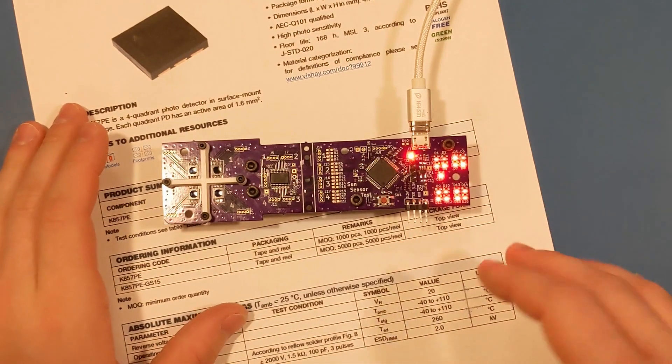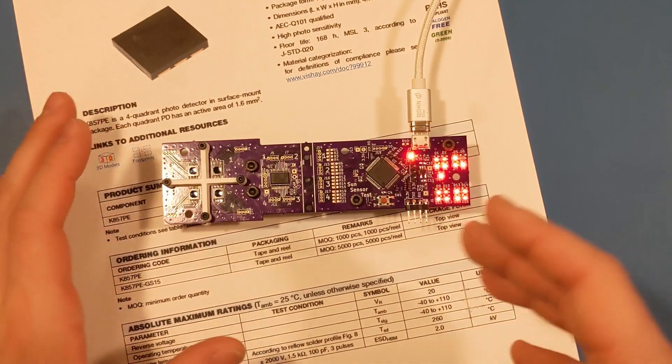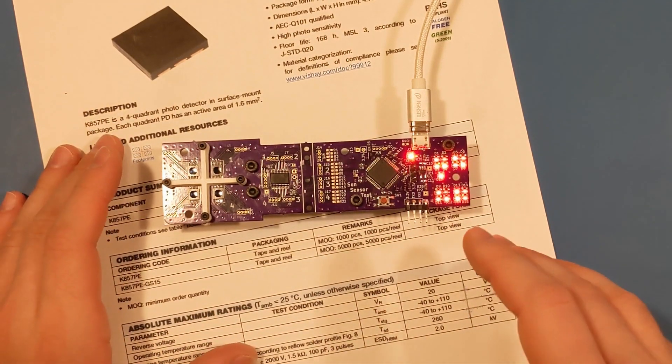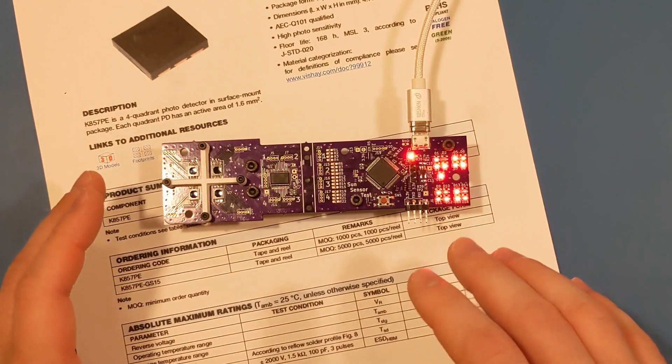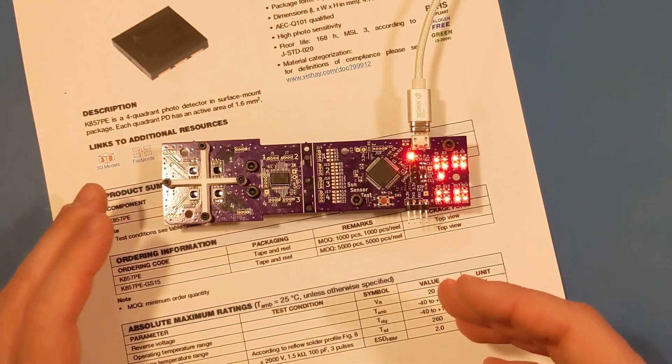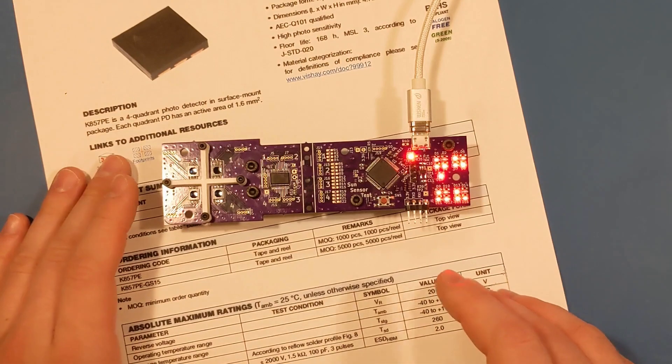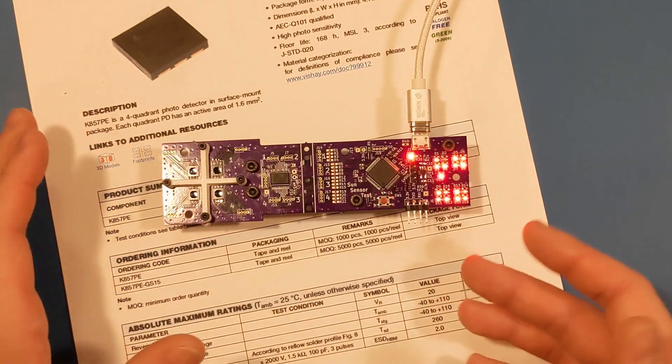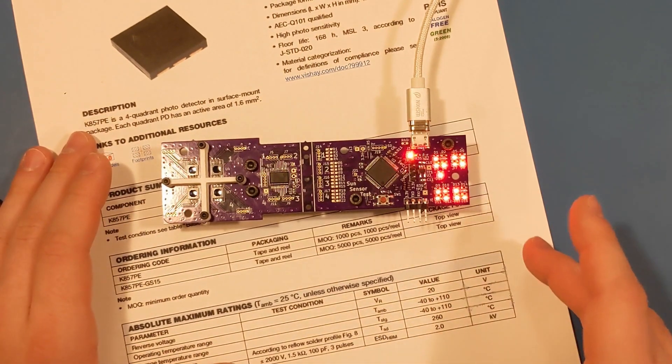To get position data out of this sensor, I essentially just compare the relative brightness of all the photodiodes and graph a best-fit plane. I then calculate the angle of the light based on how that plane is tilted. And let me show you what I mean.